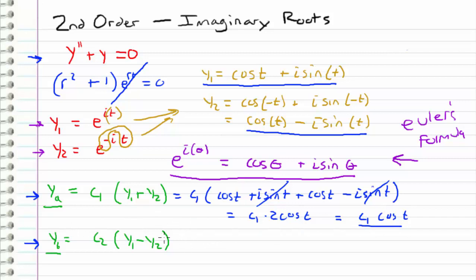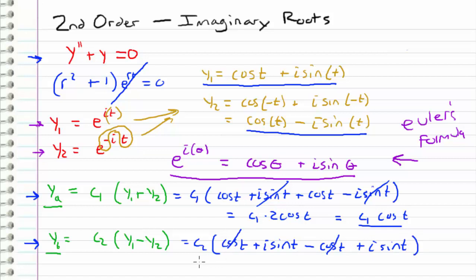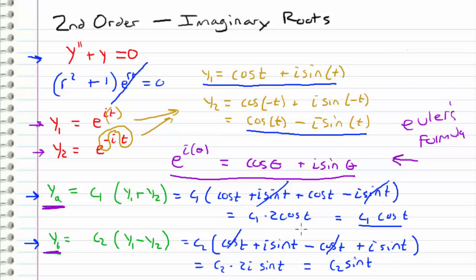For YB, we have c2 times y1 minus y2, which equals c2 times (cosine t plus i sine t) minus (cosine t minus i sine t). The cosine terms cancel, leaving c2 times 2i times sine t. We absorb 2i into the constant c2, so YB equals c2 times sine t. By choosing these linear combinations, YA cancels the imaginary parts and YB isolates them into the constant.